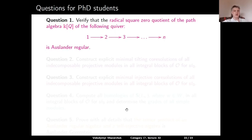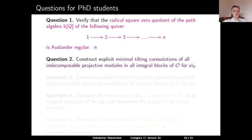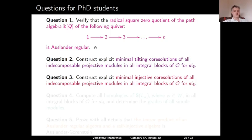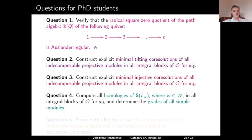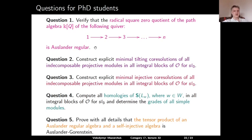Let us finish with some questions for PhD students. Question 1: verify that the radical-square-zero quotient of the path algebra of the uniformly oriented type A_N Dynkin quiver is Auslander regular. Question 2: construct explicit minimal tilting co-resolutions of all indecomposable projective modules in all integral blocks of O for SL_3. Question 3: construct explicit minimal injective co-resolutions of all indecomposable projective modules in all integral blocks of O for SL_3. Question 4: compute all homologies of the images of simples under the Serre functor in all integral blocks of O for SL_3, and hence determine the grades of these simple modules. Question 5: prove with all details that the tensor product of an Auslander regular algebra and a self-injective algebra is Auslander-Gorenstein. Thank you very much.